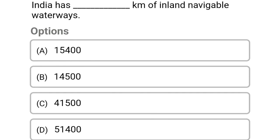India has how many kilometers of inland navigable waterways? Option A: 15,400. Option B: 14,500. Option C: 41,500. Option D: 51,400. The correct answer is Option B, 14,500 kilometers.